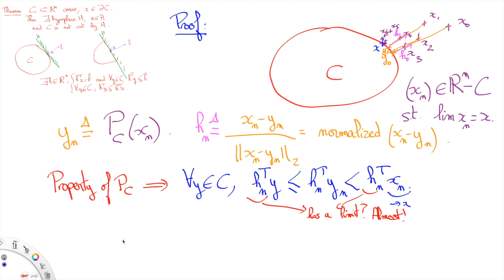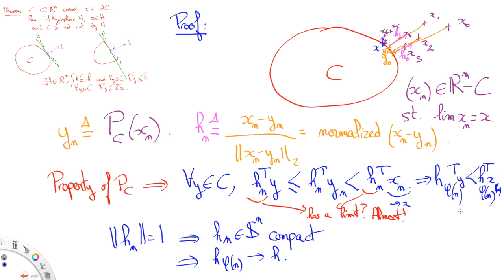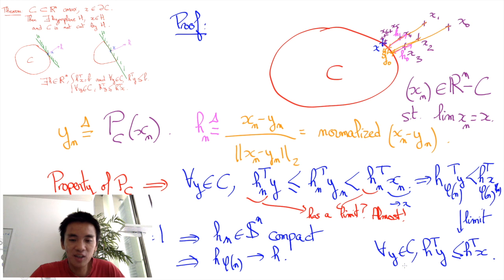Now the Hn have norm 1, which means that it belongs to the n-sphere, which is a compact space. This sequence thus has an adherence value H. Taking the previous inequality for a specific subsequence that corresponds to this adherence value yields H transpose y at most H transpose x, which corresponds exactly to saying that H is a normal vector of a supporting hyperplane. QED.